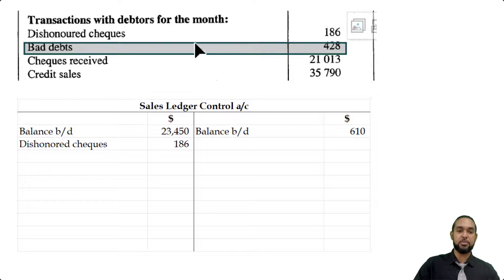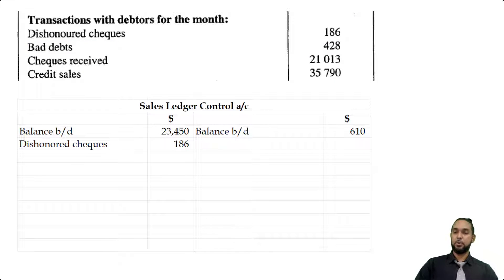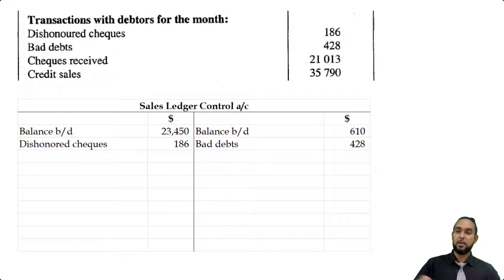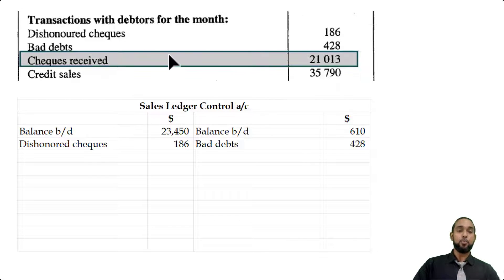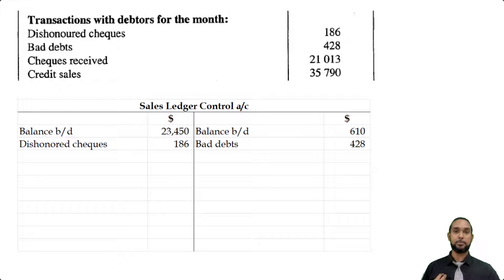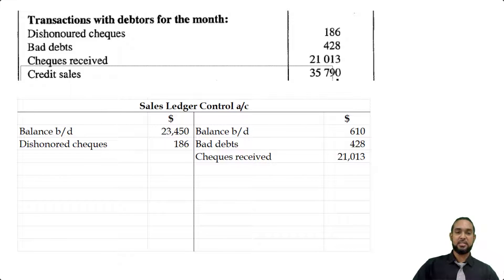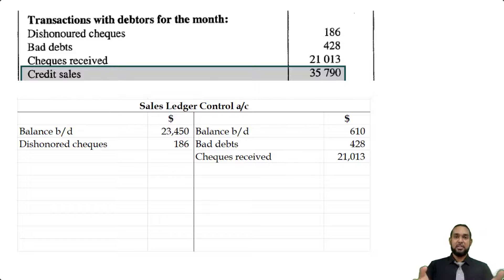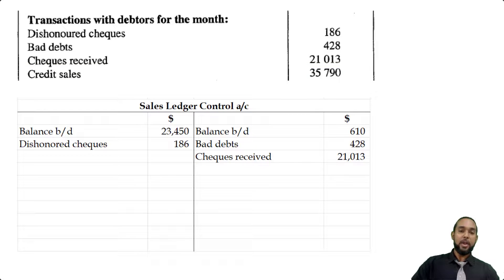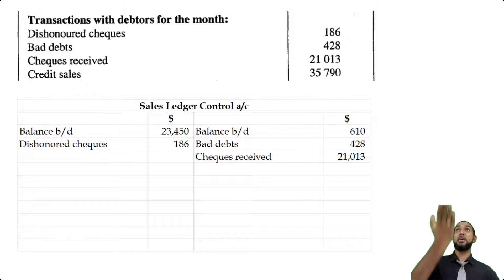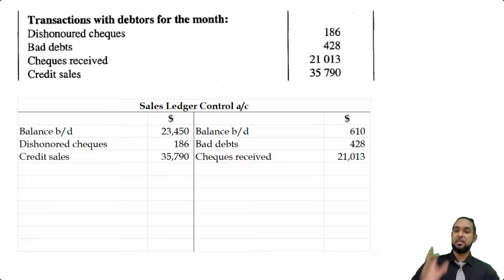Bad debts of 428 — when we can no longer reasonably expect to collect the debt, we remove it from the books. To decrease an asset you credit the asset account, so bad debts appear on the credit side. Checks received mean debtors are paying us off, so the asset goes down — credit side. Credit sales of 35,790 are the transaction that causes a debtor to exist in the first place: they owe us money, so the asset increases, requiring a debit to the asset account.